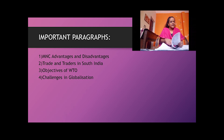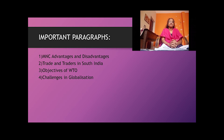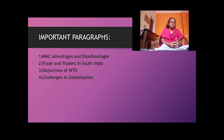Explain the trade and traders in South India. First, the Portuguese section: the Portuguese under the leadership of Vasco da Gama landed at Calicut on 17th May 1498. The second trip of Vasco da Gama in 1502 led to the establishment of trading stations at Calicut, Cochin, and Kannur. Cochin was the early capital of the Portuguese in India.